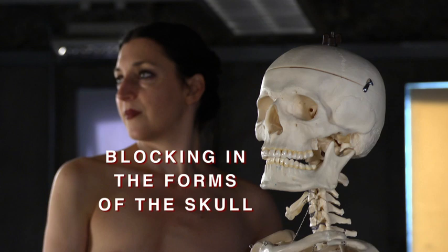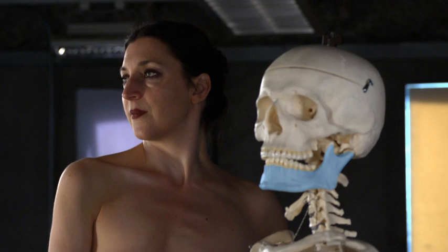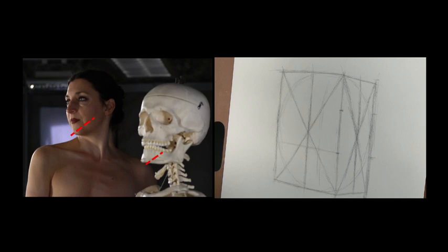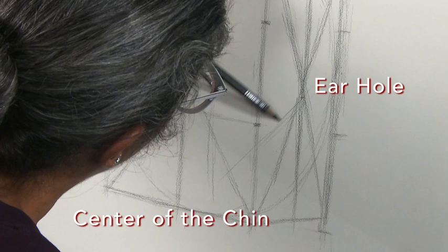The mandible has three major angles and defines the lower part of the skull. Now we will angle sight from the center of the chin to the ear hole and document that information on the paper.